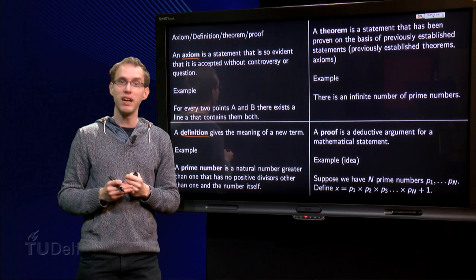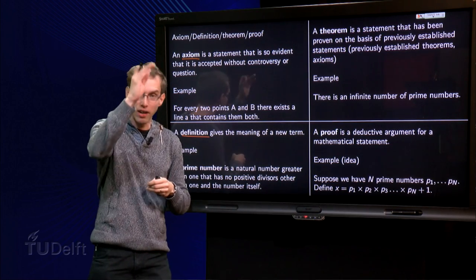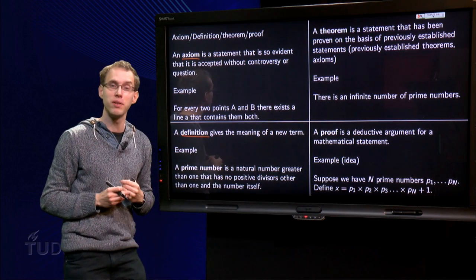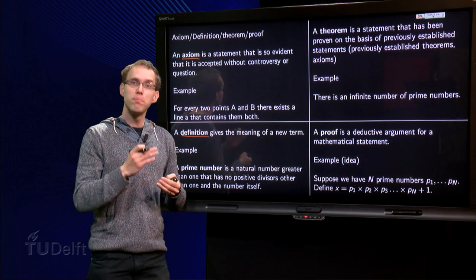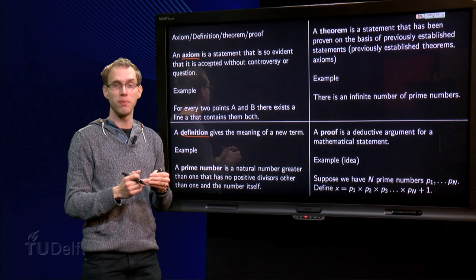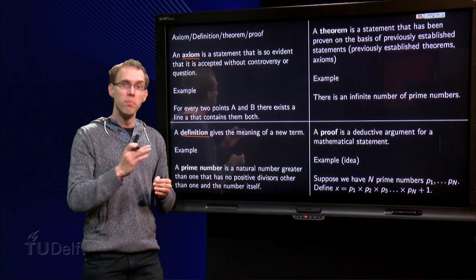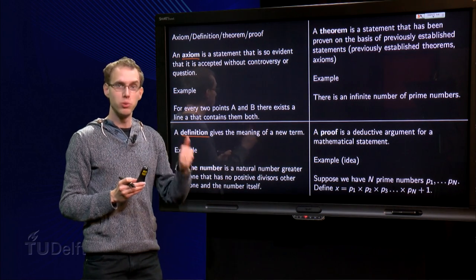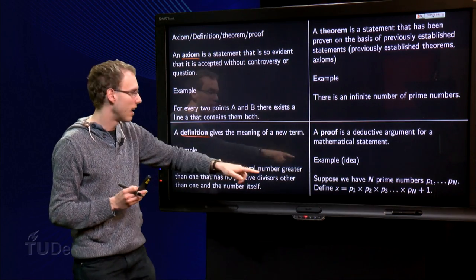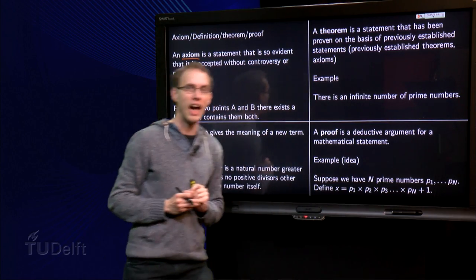We have a theorem, how would the proof look like? I'll just give the idea. So how do we show that there is an infinite number of prime numbers? Well, suppose you have n prime numbers, so suppose there is the highest prime number. What you do then is that you multiply all prime numbers, so 2 times 3 times 5 times 7 times 11 times 13, up till this highest prime number Pn, and then you add 1.